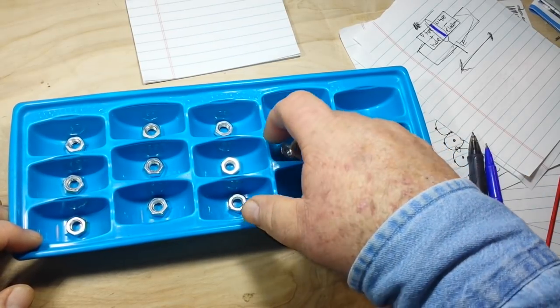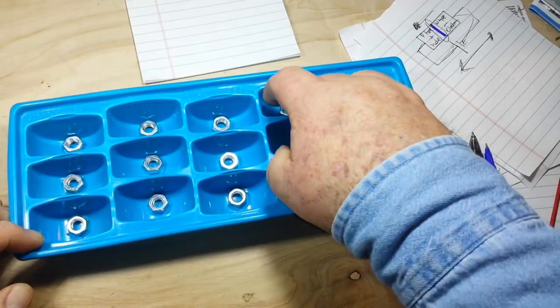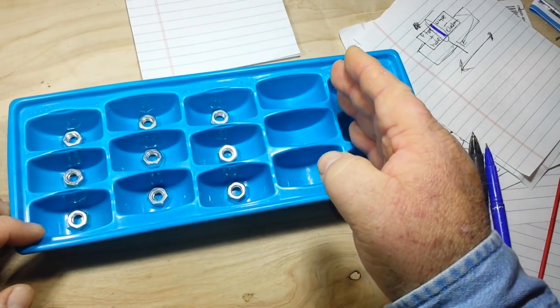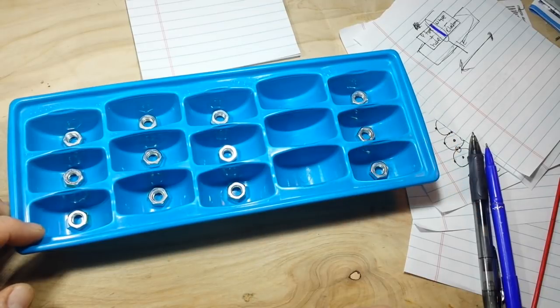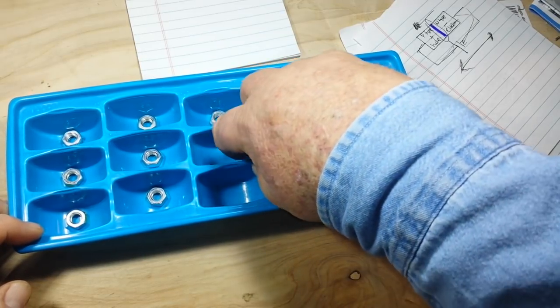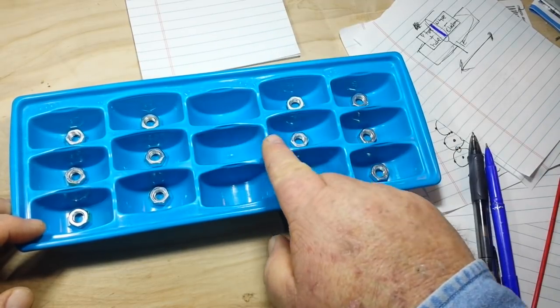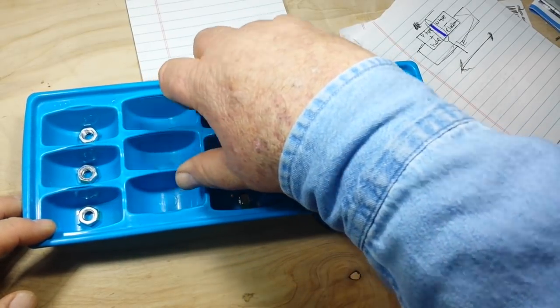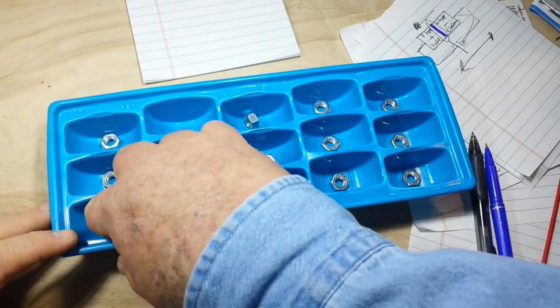Our electrons move in this direction. The hole, as you can see, has now moved in the opposite direction, and this is the direction of current flow. So as more electrons move in this direction, the holes move in this direction.